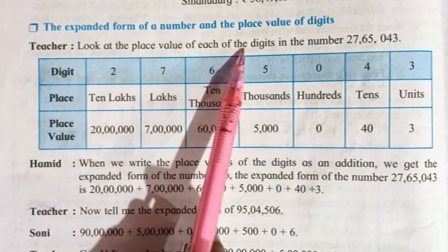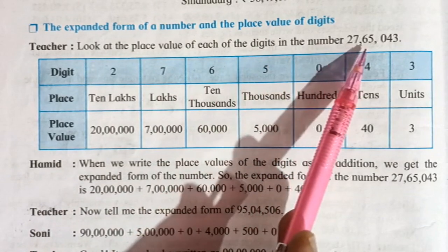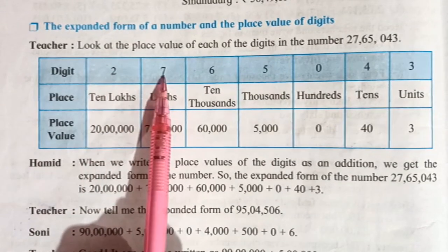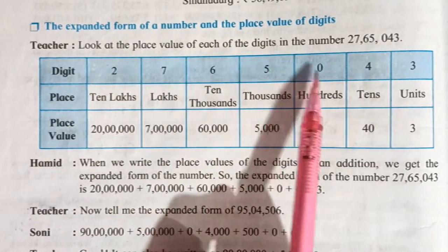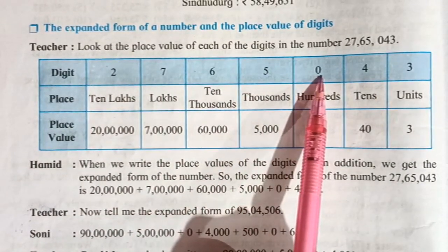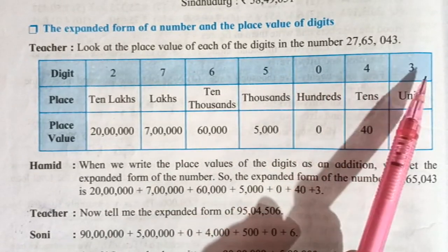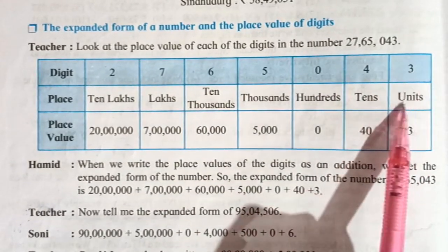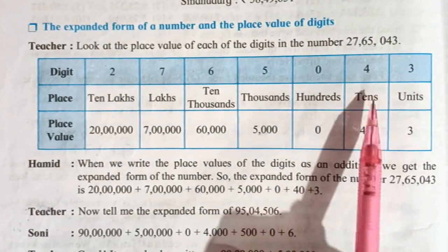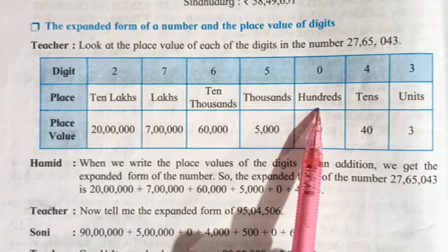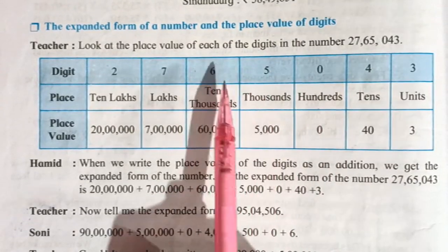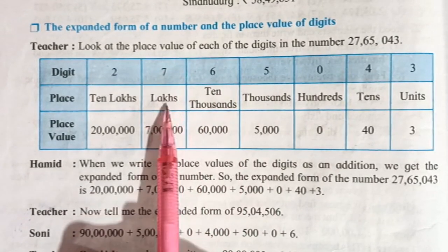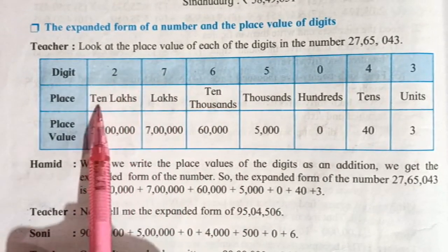Look at the place value of each of the digits in the number 27,065,043. We will start from the units place: 3 is at units place, 4 is at tens place, 0 is at hundreds place, 5 is at thousands place, 6 is at ten-thousands place, 7 is at lakhs place, and 2 is at ten-lakhs place.